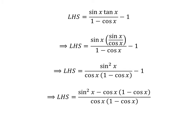Addition of the fractions gives us: the left hand side of the identity is equal to square of sine of x minus cosine of x times 1 minus cosine of x, upon cosine of x times 1 minus cosine of x.